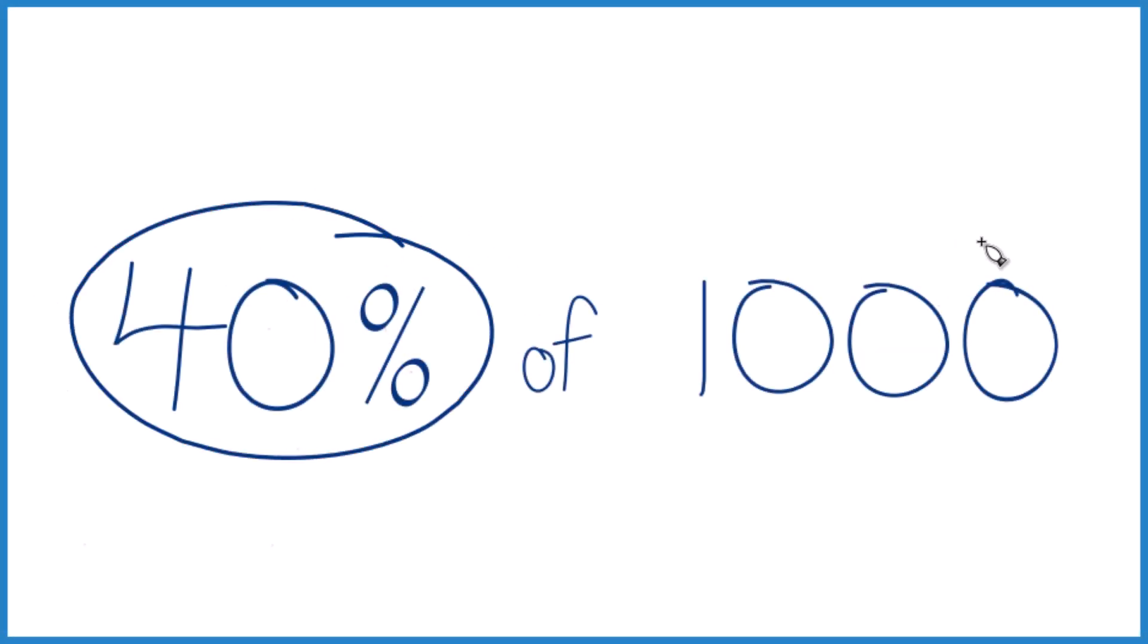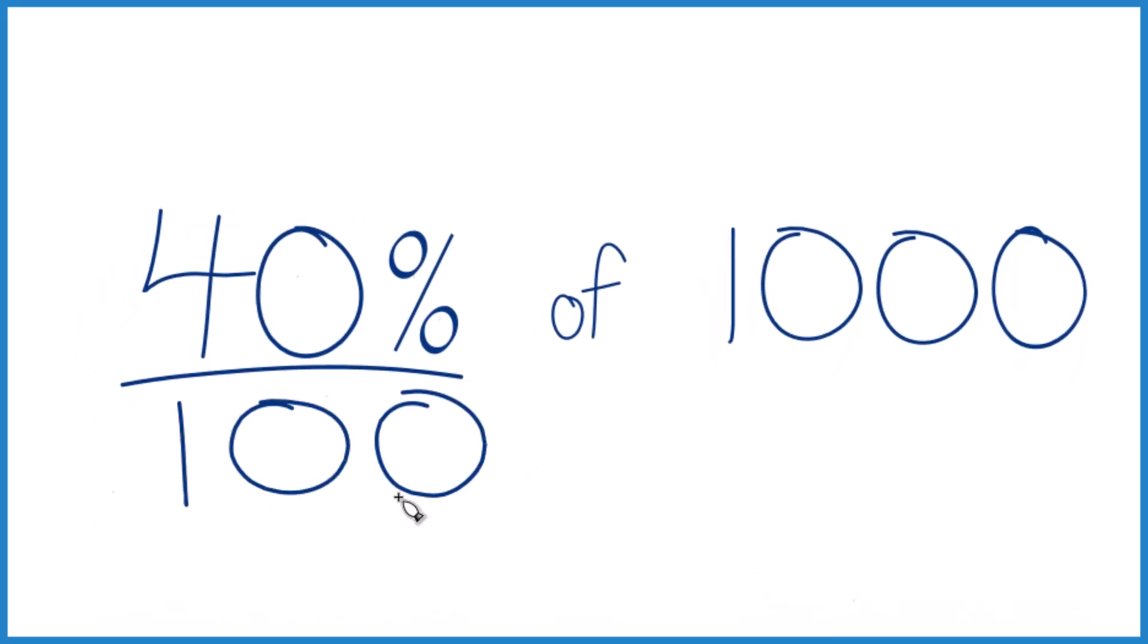Let's find 40% of 1,000. So the way I like to think about this is that 40%, that's 40 per 100. So if I only had 100, that would be 40.